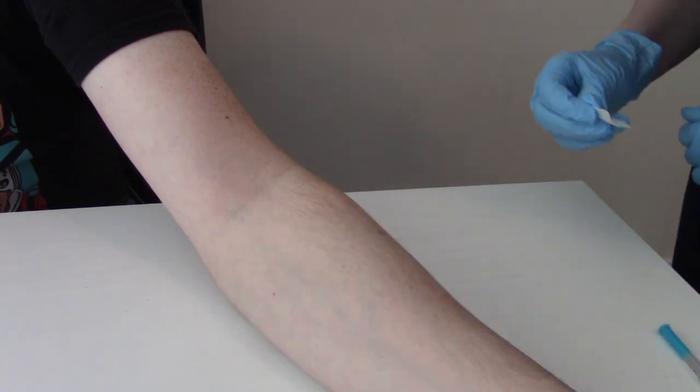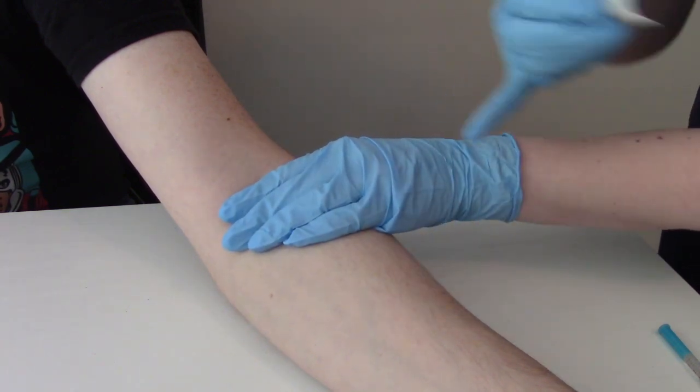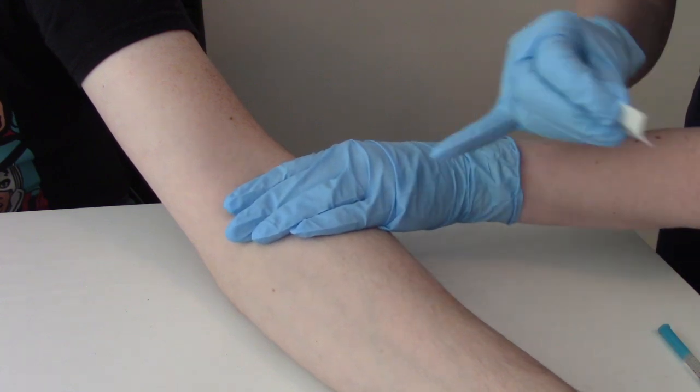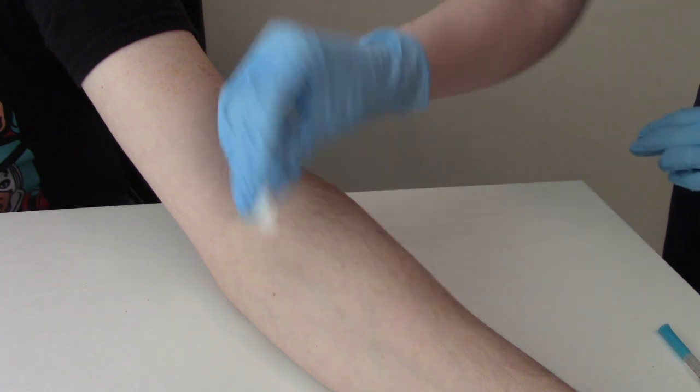Now we're ready to do our intradermal injection. To find the location, you're going to go one, two, three, four fingers down on the forearm, making sure that the patient's arm is flat and resting on a surface like a table. Then about this point, you're going to wipe it.